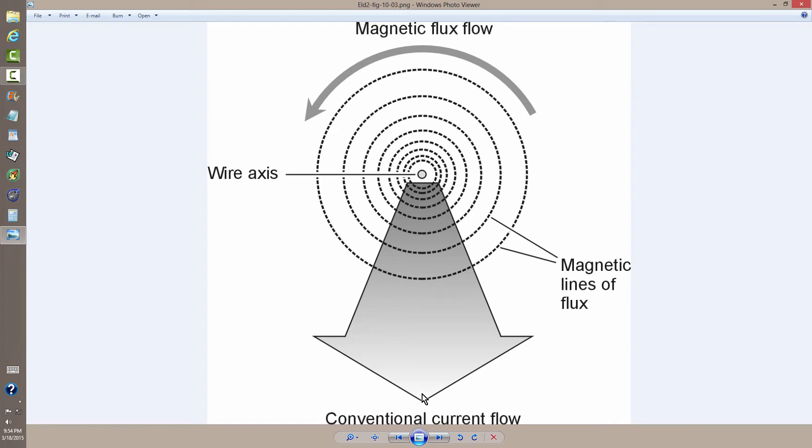Electrons in a wire flow exactly opposite from conventional current. So here, the electrons would actually be flowing straight away from you, straight into the page, through the wire axis point shown here, and out the back of the page, and here again are those circular magnetic lines of flux around the wire, just seen from a little different angle.